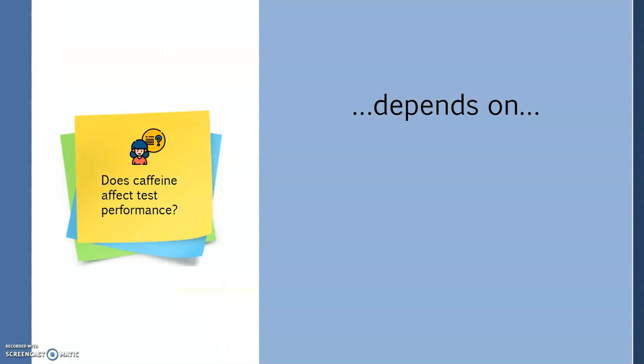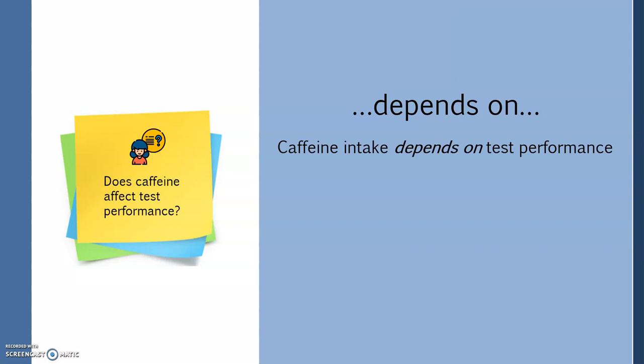Another way to tell the difference between the independent variable and dependent variable is to use the phrase depends on. You can ask yourself two questions. Does it make more sense to say that caffeine intake depends on test performance or test performance depends on caffeine intake? Based on our hypothesis, it makes much more sense to say that we think test performance depends on caffeine intake.